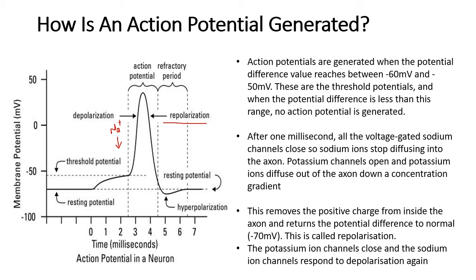Before resting potential is fully restored, we have hyperpolarization. This simply means that the potassium ion channels don't close quickly enough, so we lose more potassium ions than necessary, making the inside more negative than the resting potential before it recovers. Because this can be confusing, I have created an animation in PowerPoint with everything laid out in steps, and I'm going to do a video on that so it's easy for you to follow.